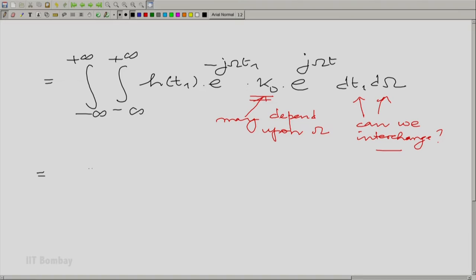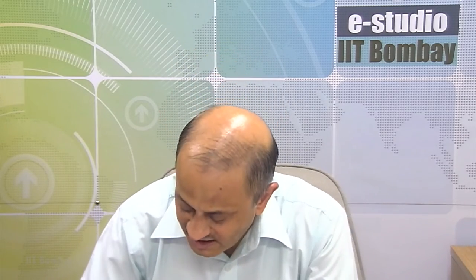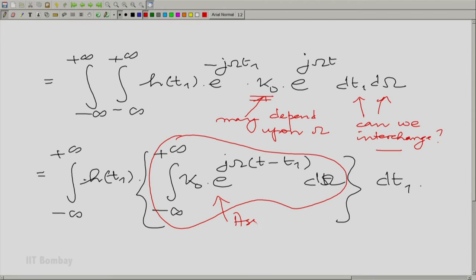Now let us look at the expression once again. This after interchange would become minus infinity to plus infinity. I keep the t₁ quantities outside and I take the omega quantities and I can put those quantities together. dω first and then dt₁. We said κ₀ needs to be a function of omega in general. I am trying to give a functional understanding, I am not being too rigorous. We do not have to make κ₀ a function of omega. We will do that only if required. Let us begin by seeing if we can avoid making κ₀ a function of omega. Let us look at this particular inner integral here.